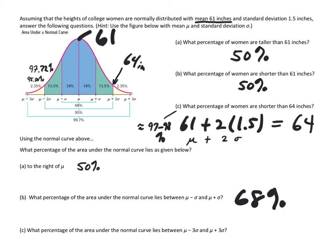These percentages fall into what's called the empirical rule. Each deviation you separate from the mean captures more and more of your population. If you spread out two deviations from the mean, you capture about 95% of your population. And if you separate all the way out to three deviations, you get 99.7% of your population data.